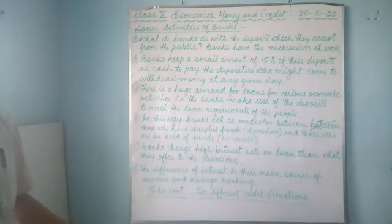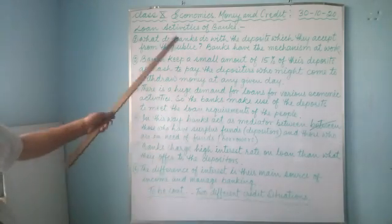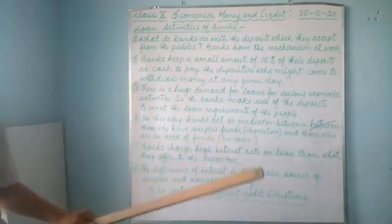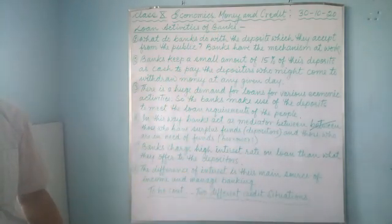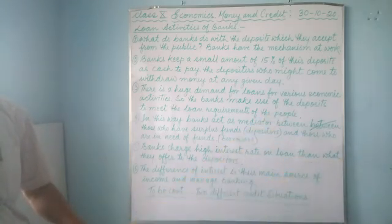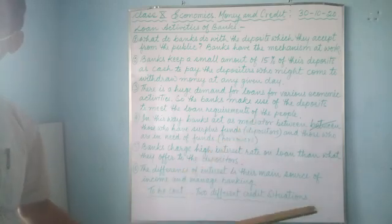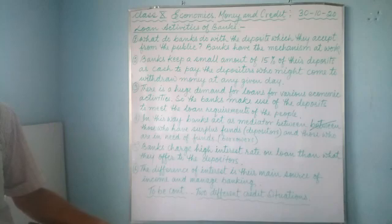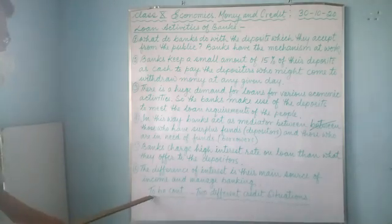This is all about the loan activities of the banks. In this way they keep only 15%, and the remaining 85% they provide as loans. They charge high interest to the borrowers compared to what they offer to the depositors, so the difference in interest is their main income, and with that income they manage the banking system.